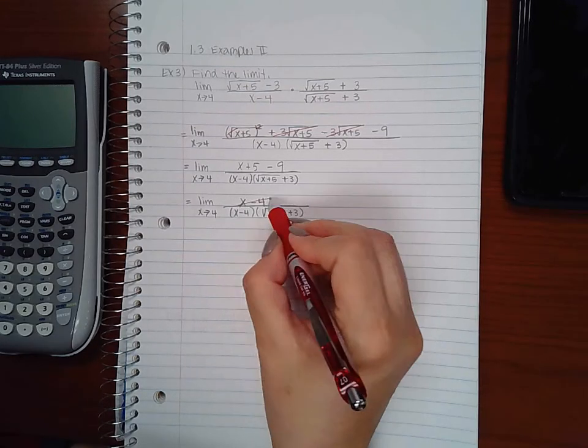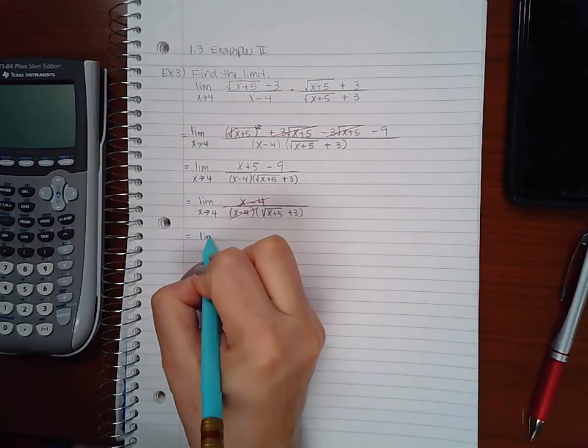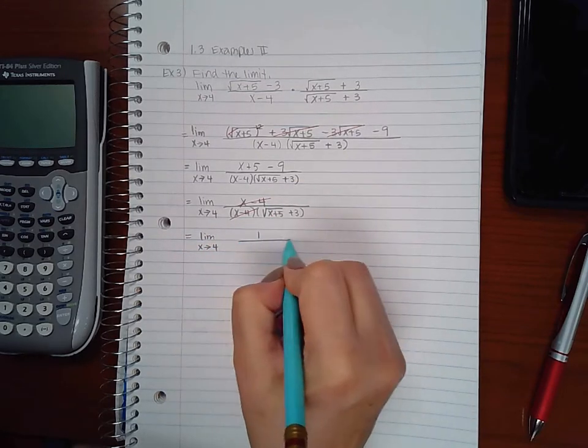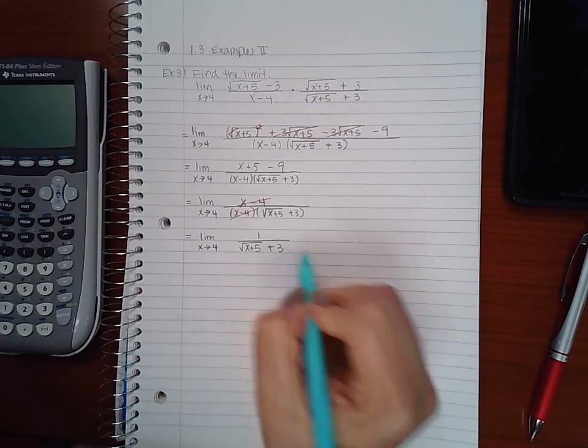And then we notice that this will cancel with this factor, leaving us with just a 1. It'll reduce to 1 over square root of x plus 5 plus 3.